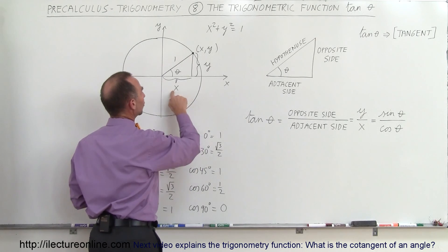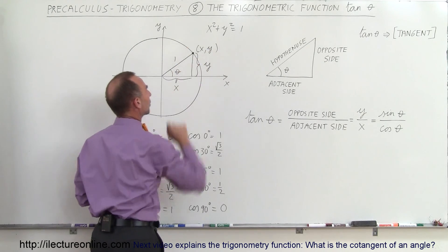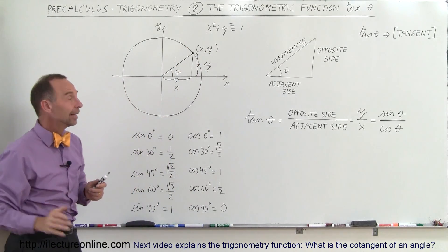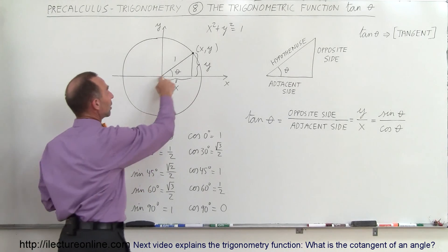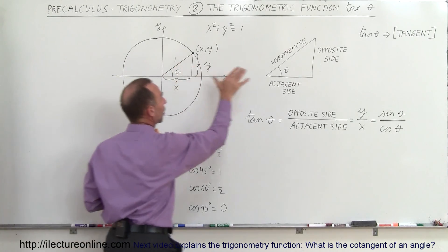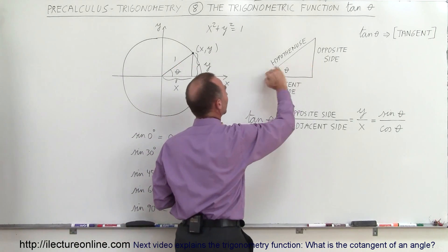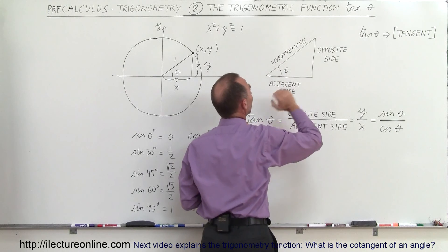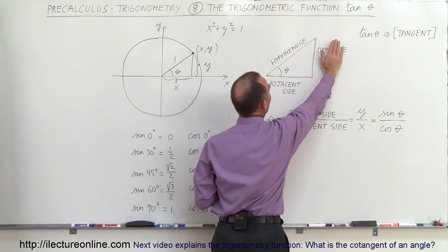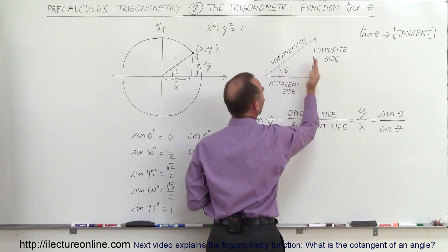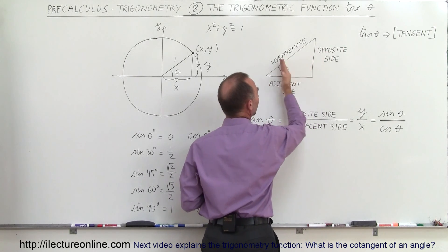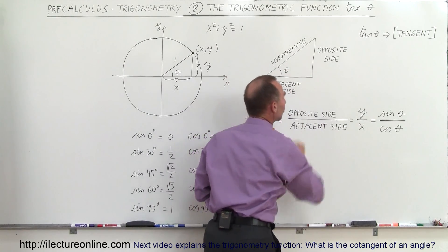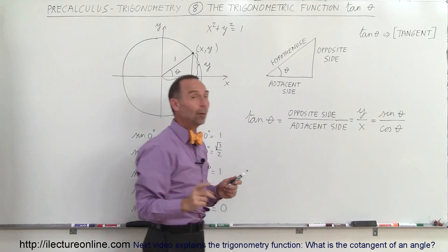And x will have the value of the distance from the origin to that point. Notice that x squared plus y squared equals 1 squared — that's where the equation comes from. If we take this triangle right here and draw it over here, we can see that this is the hypotenuse in the unit circle, equal to 1. There's the opposite side to the angle, and the adjacent side touches the angle.